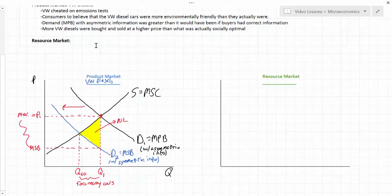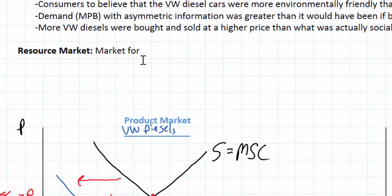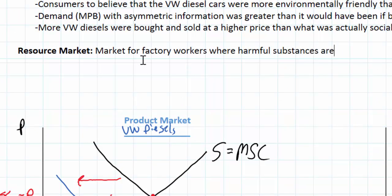Next I want to look at an example of a market in which the buyer has more information than the seller, leading to an over-allocation of resources towards the good. We'll be looking at a resource market — specifically the market for workers in a factory where harmful substances are used. The scenario is based on a historic situation in which many factory workers in rich industrialized countries were exposed to toxic chemicals such as asbestos, a chemical used in factory production that has a high likelihood of causing cancer among those who inhale it later in life.